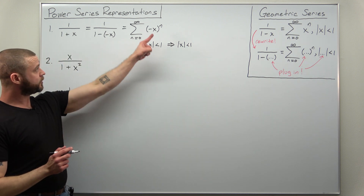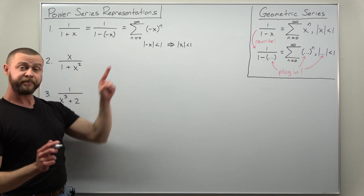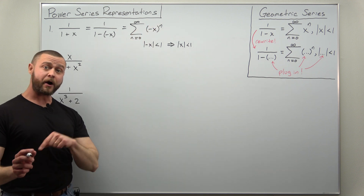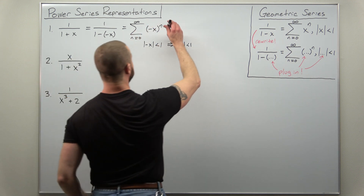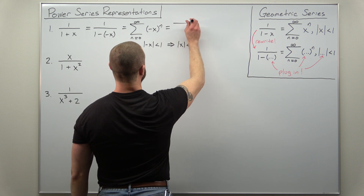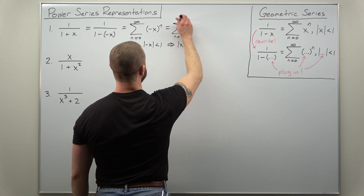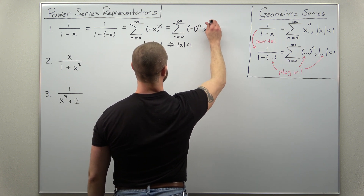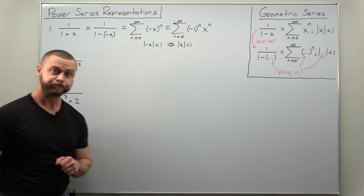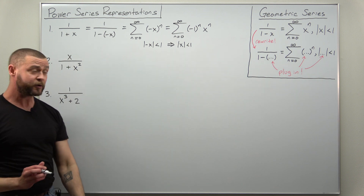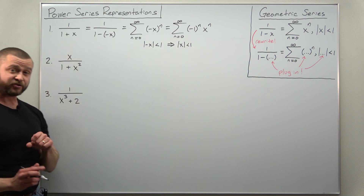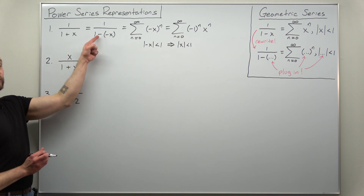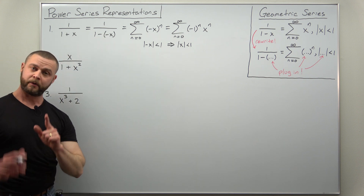We can clean this up a bit: think of negative x to the n as negative one times x all to the nth power, so we can rewrite the power series as the sum from zero to infinity of negative one to the n times x to the n. That is the power series representation for one divided by one plus x.